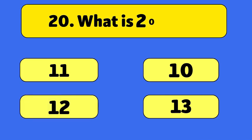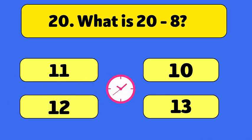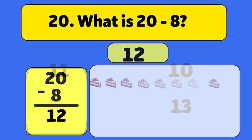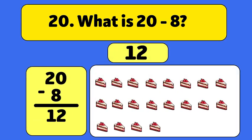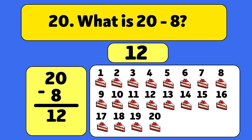What is 20 minus 8? Let's count: 1, 2, 3, 4, 5, 6, 7, 8. We have 12 cakes now.